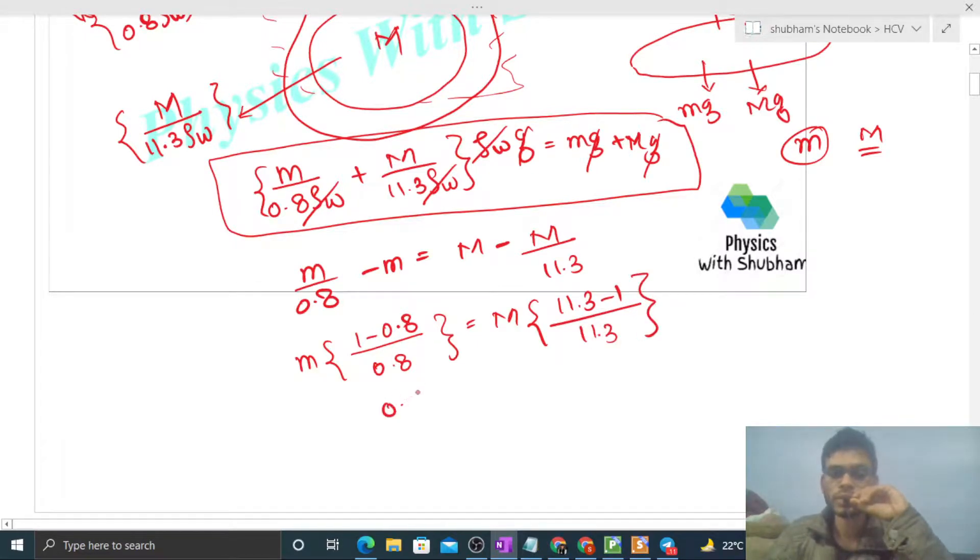So how much is this? This is 0.2/0.8 which is small m/4. That should be equal to capital M times 10.3/11.3. So capital M will be simply 11.3 into small m divided by 4 into 10.3.